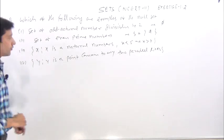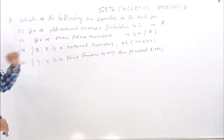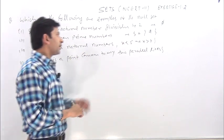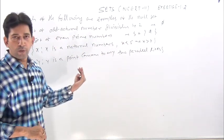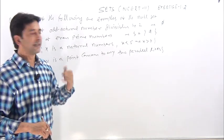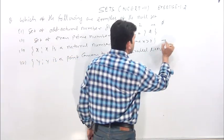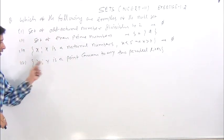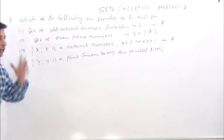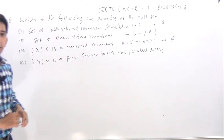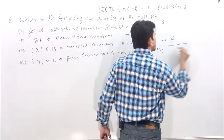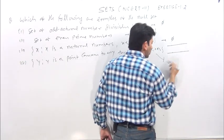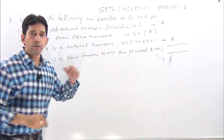Here, third: x such that x is a natural number, x less than 5 and greater than 7. Natural numbers less than 5 means 1, 2, 3, 4; greater than 7 means 8, 9, 10. Common? This is also empty set. Fourth: y is a point common to any two parallel lines. Two parallel lines have no common point. This is also empty set.